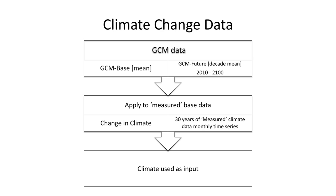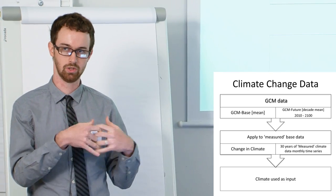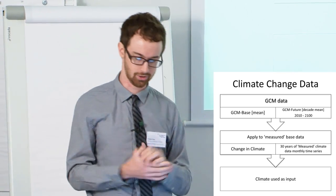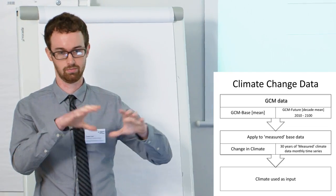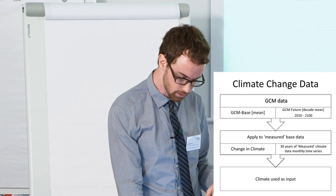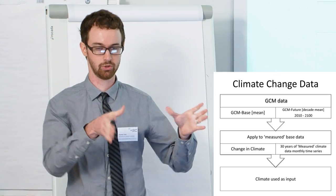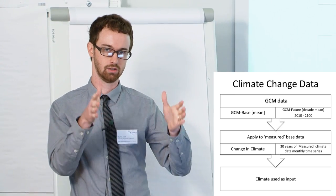So what we do is we take GCM historical and, because each, each GCM runs a historical run. We take the future GCM results and we take those and we figure out what's the change. Because GCMs don't do a great job of predicting what has already happened, what we know has happened. So we end up with this change in climate and we take that change in climate and in this case, we had a 30 year measured climate and we put those together. So we nudge the measured climate or shock it if you're an economist. And then we end up with this climate that we put into the model.